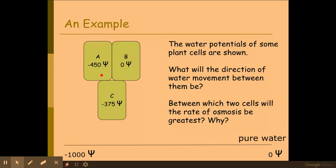If I looked at and compared cell A and C, and ignored B for now, cell C has the higher water potential of those two cells. Therefore, the water would move from cell C to cell A down the water potential gradient by osmosis. I'm hoping you're getting the pattern there to get your marks.